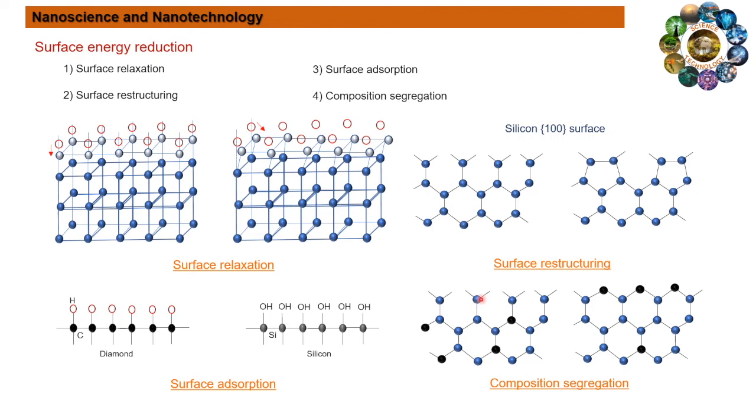So in this way the surface energy can be reduced. I hope this will give some understanding on how surface energy reduces at nano level through these processes. Next time we will see other discussion.